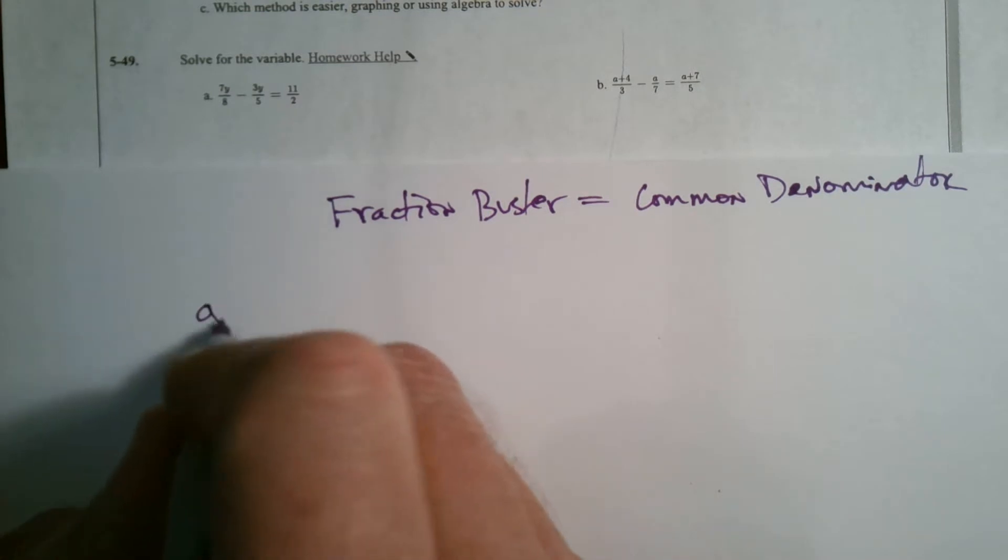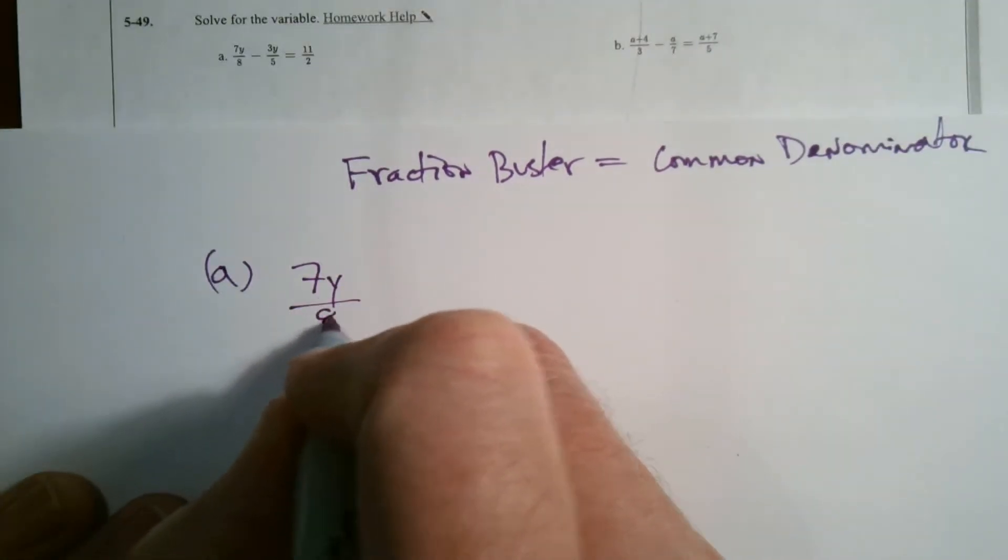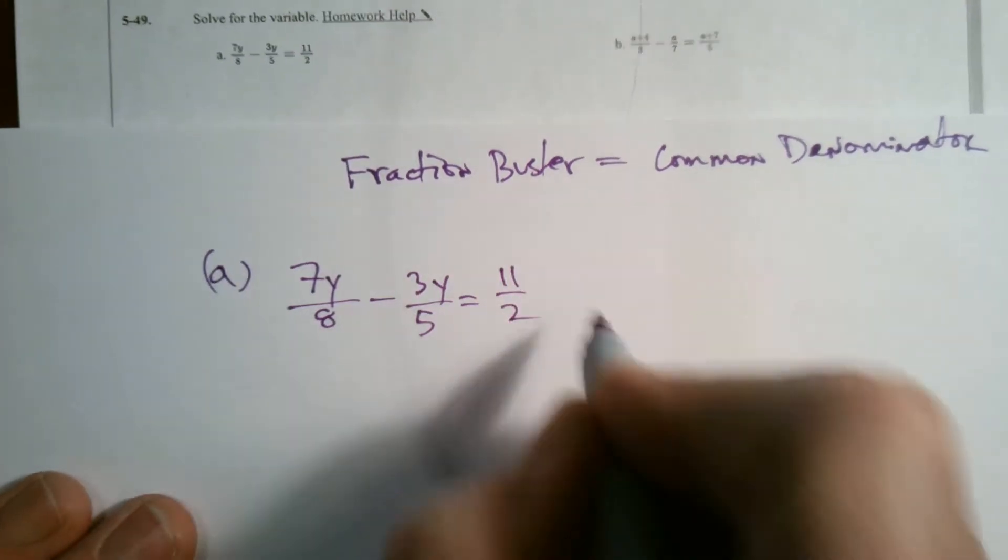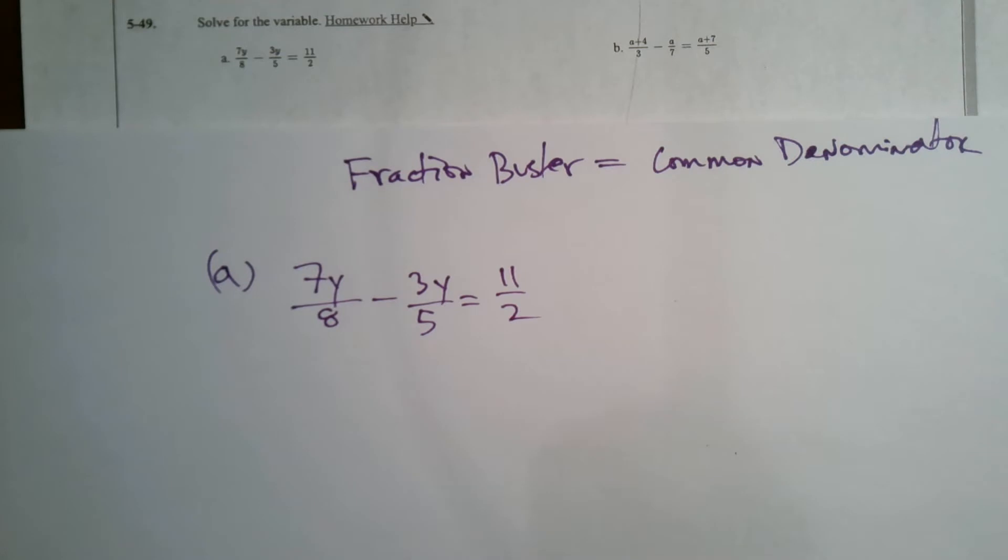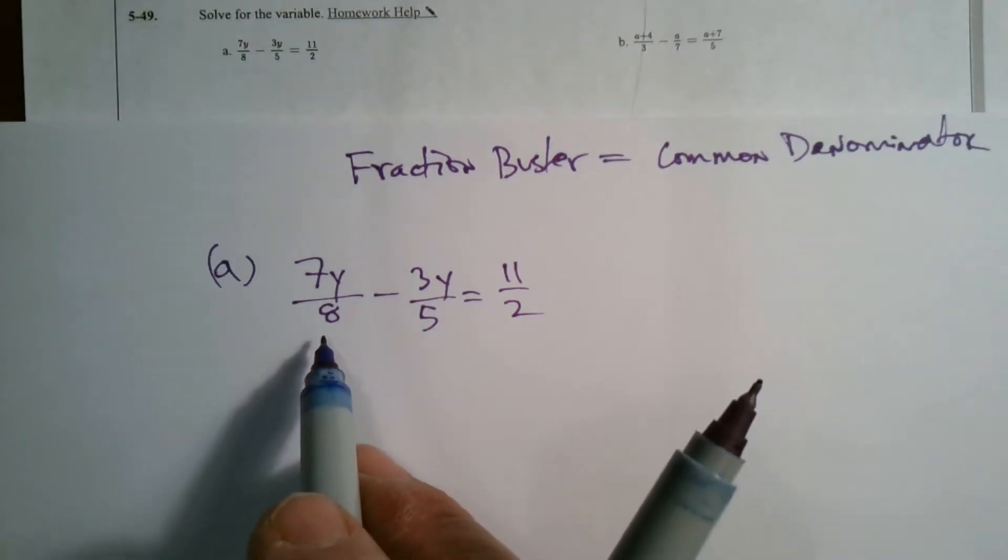I'm going to rewrite these questions because they're a little small here. For part A, we have 7y over 8 equals 3y over 5 which equals 11 over 2. So what are my denominators? My denominators are 8, 5, and 2. So I have to find the number that each of these go into, the common denominator, right? What is the common multiple for each of the 8, 5, and 2?